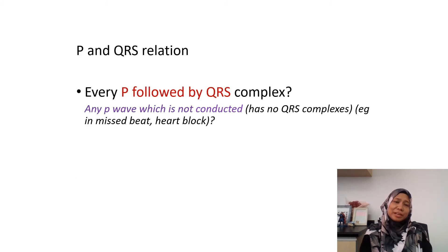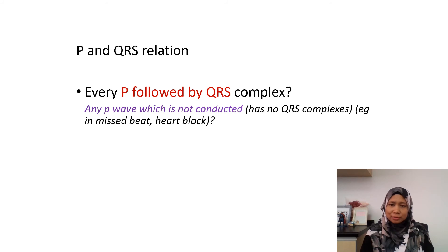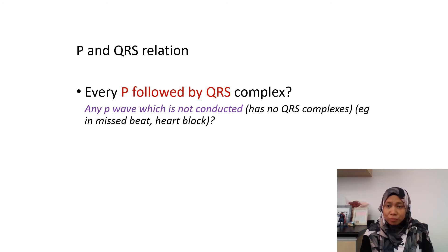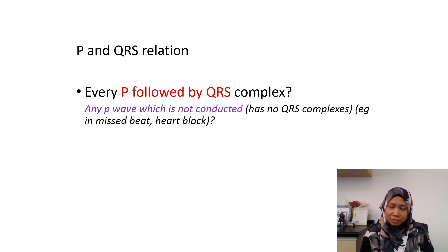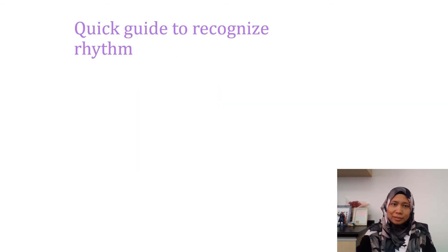Now we look at the P and QRS relationship — is every P followed by a QRS complex? If there is any P that is not conducted, meaning there is a P wave not followed by a QRS complex, then that P is not conducted. This happens in heart block, and we call it a missed beat.